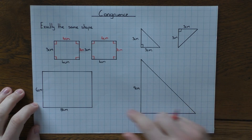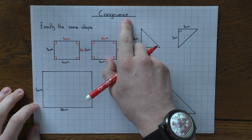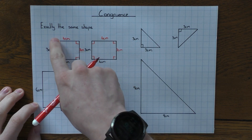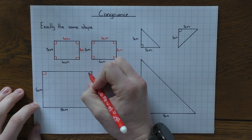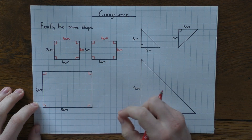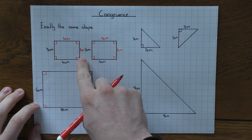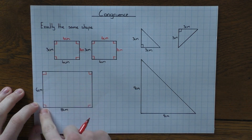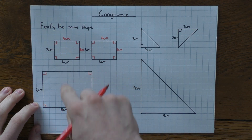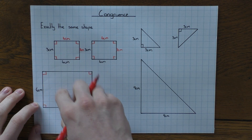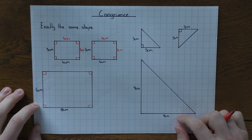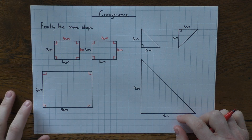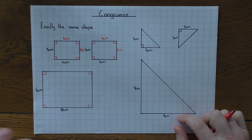It's worth mentioning the difference between congruency and similarity, because this is where people generally get confused. Congruent shapes have angles and sides exactly the same. Similar shapes have the same angles, but they are an enlargement of each other. So if you take a 3x4 rectangle and double both sides to 6 and 8, those two shapes are similar — not congruent, because their sides are different — but similar because one is just an enlargement of the other.